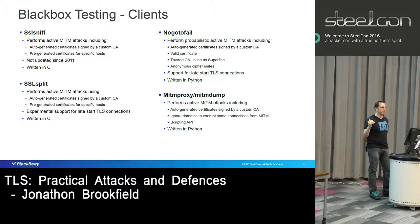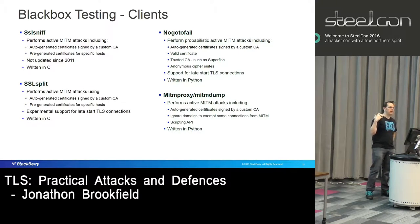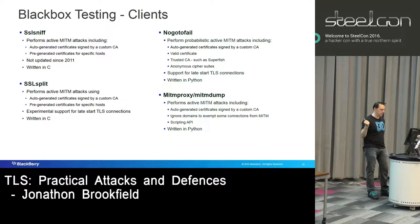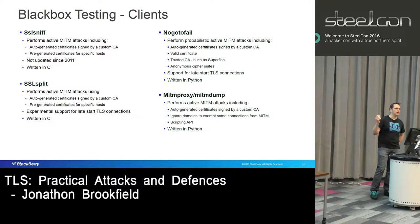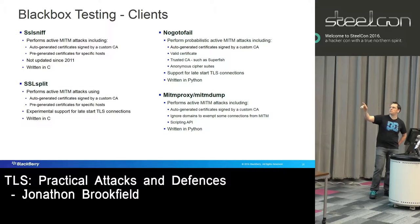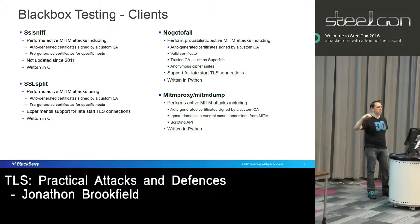Since then I've been using SSL split — a very similar idea. It'll intercept TLS connections going through a Linux box and produce server certificates using a custom CA. It's also worth pointing out this one has support for late start TLS connections. Some connections like POP3 and IMAP will start off plain text and then switch to STARTTLS — this application will detect that so you can perform active attacks on those connections as well.